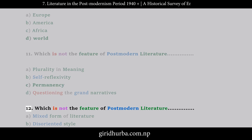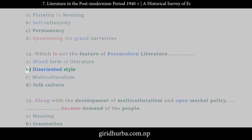Question 12: Which is NOT the feature of postmodern literature? A. Mixed form of literature. B. Disoriented style. C. Multiculturalism. D. Folk culture.